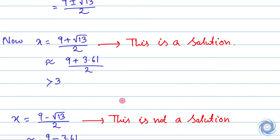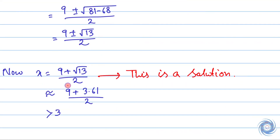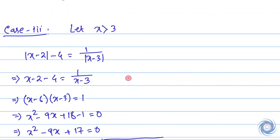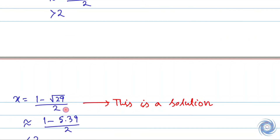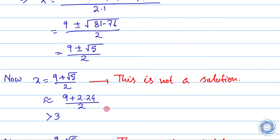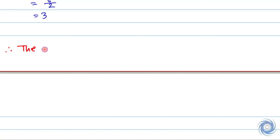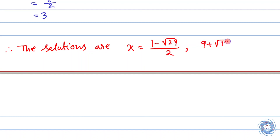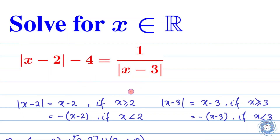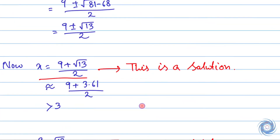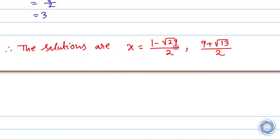So finally we have two solutions: x = (9 + √13) / 2 and x = (1 - √29) / 2. Here we are supposed to solve this equation for x, and finally we have two solutions. So we are done. Thank you.